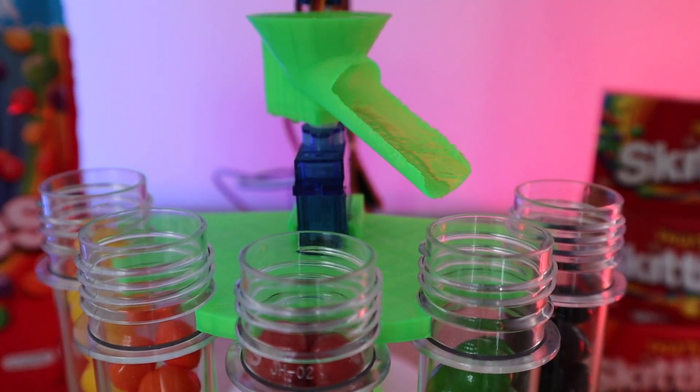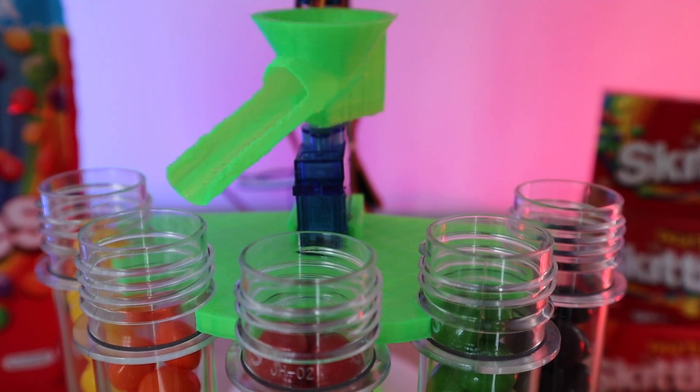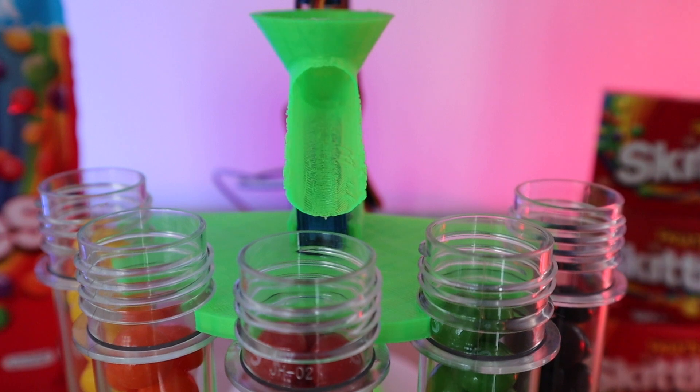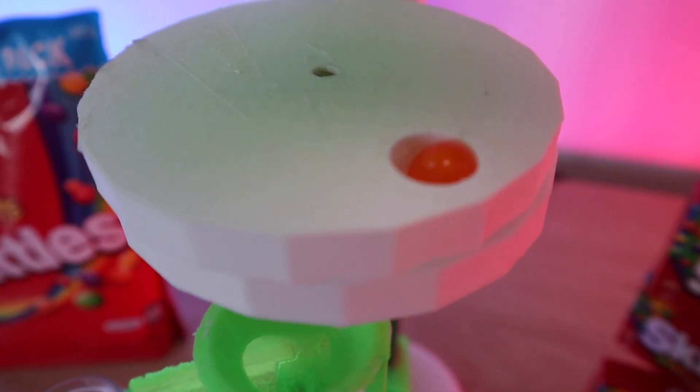You may need to make some adjustments to your sorter in the initial stages. You may find that skittles overshoot the tubes or get stuck in the hopper. You may also need to make adjustments to the colour parameters in the code if you get incorrect sorting in the beginning. My colour sorter initially muddled up the green and purple skittles and the yellow and orange skittles until I made some adjustments to the parameters.